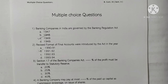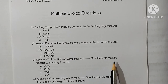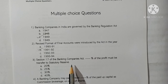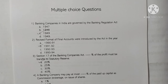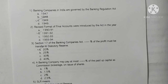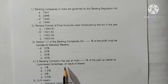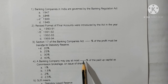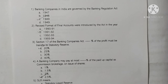Section 17 of the Banking Companies Act: a percentage of the net profit must be transferred to statutory reserve. Here 20% of the profit is transferred to statutory reserve. Option A is correct. A banking company may pay at most 2.5% of the paid-up capital as commission and brokerage on issue of shares. Option D is correct.